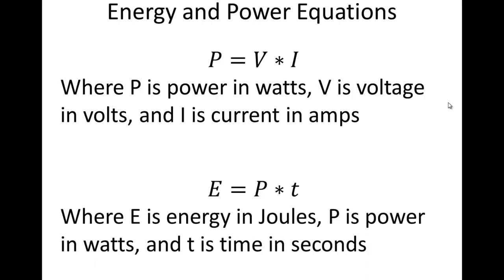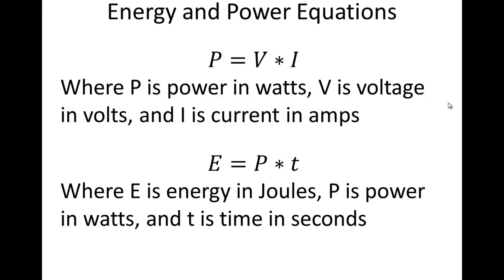Once you have power, the energy equals power times time. In this case, E is energy in joules, P is power in watts, and t is the time in seconds. So again, to get energy, you need to have some sort of time. You can't just have a maximum power.